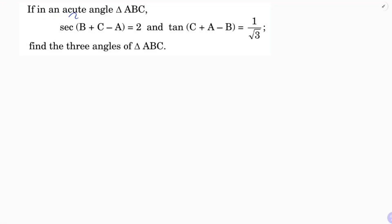In an acute angle triangle ABC, sec(B+C-A) equals 2 and tan(C+A-B) equals 1 by root 3. Find the three angles of triangle ABC.